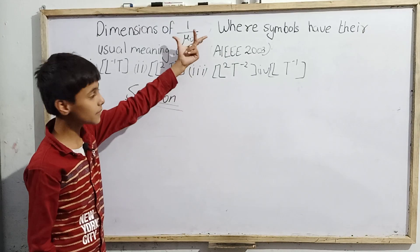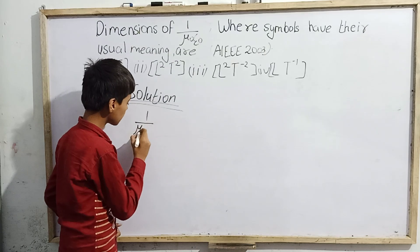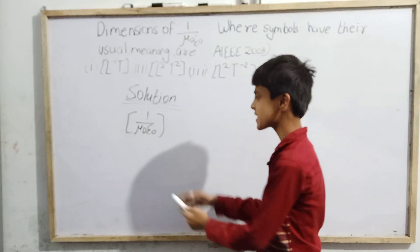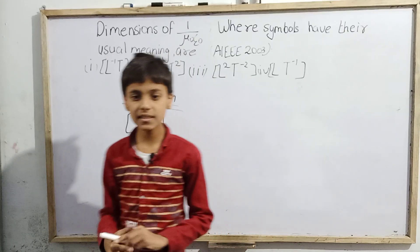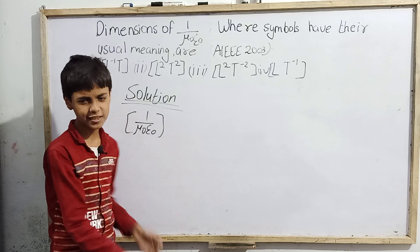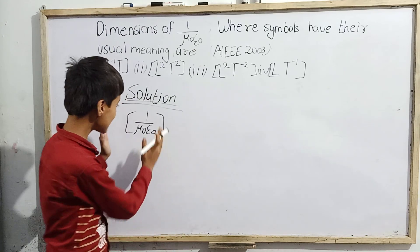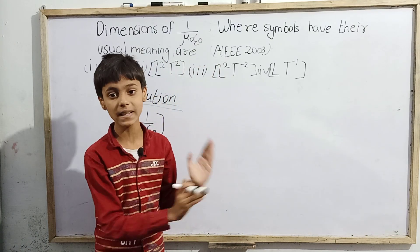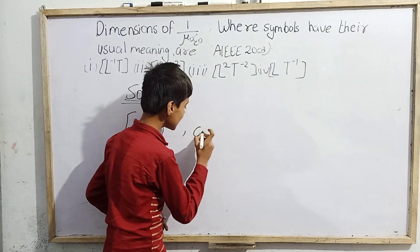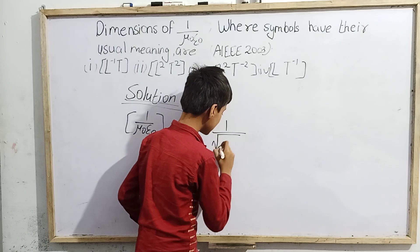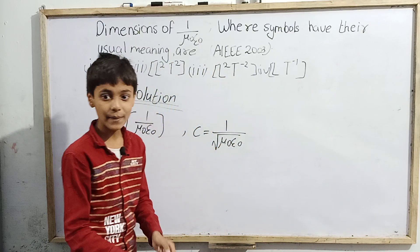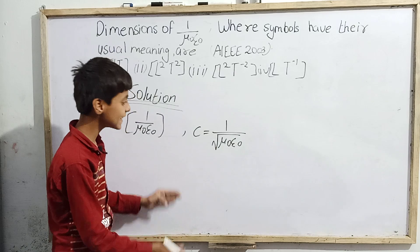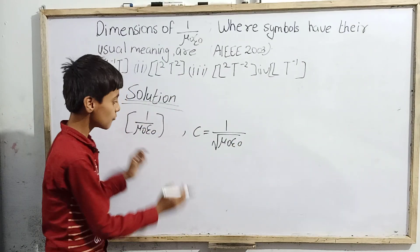We have to find the dimensional formula for 1/(μ₀ε₀). We put it under brackets because that's how we denote dimensions. I am telling a very important formula that I have covered in many previous videos: c = 1/√(μ₀ε₀). I am telling it again today because this is a very useful formula for solving this problem.